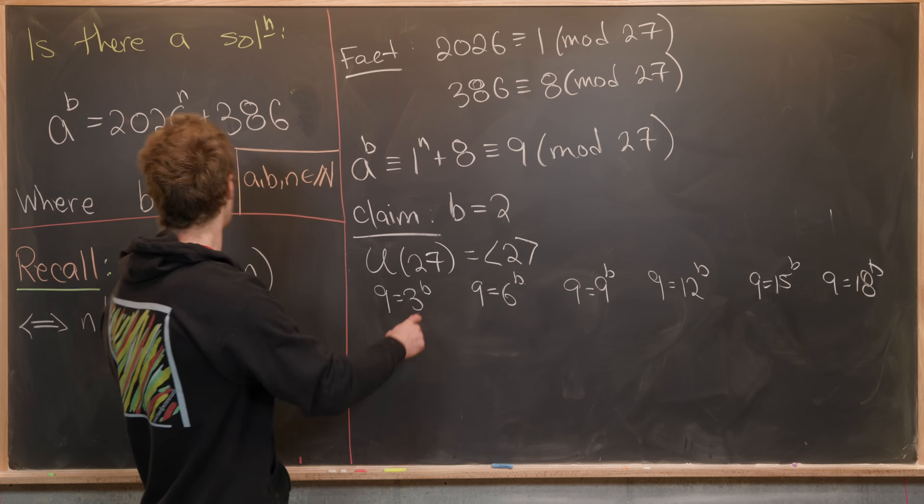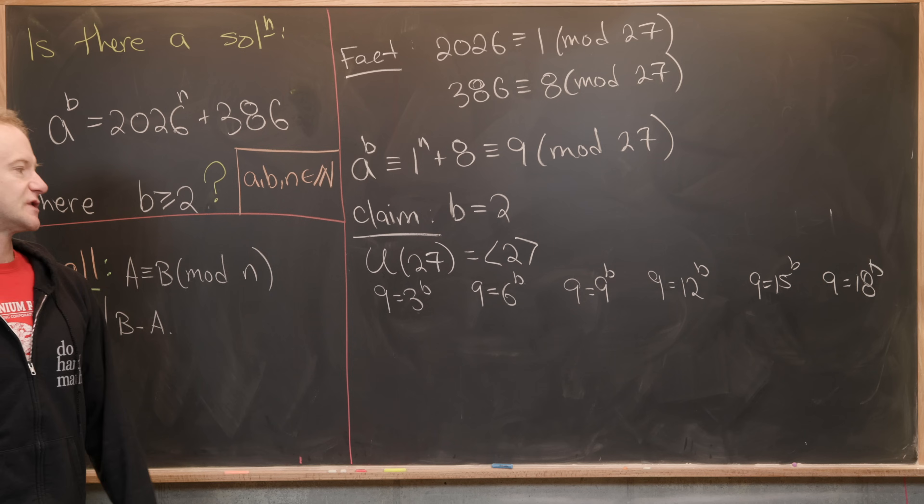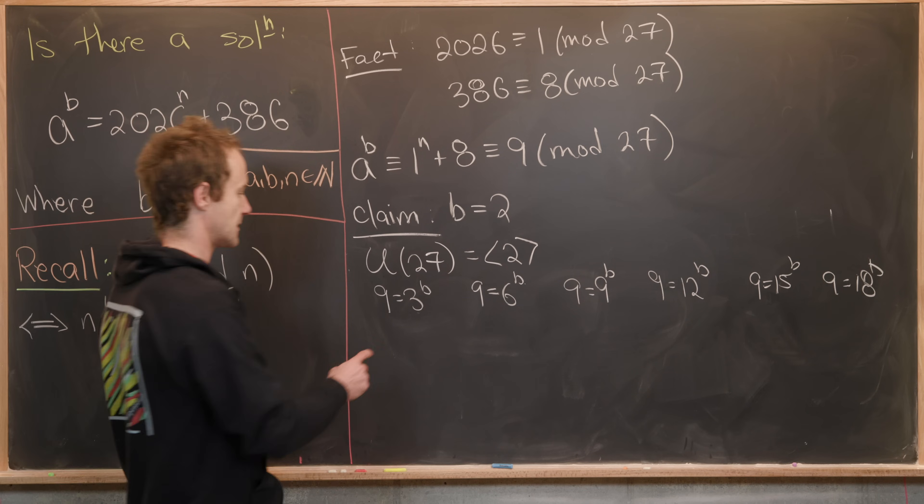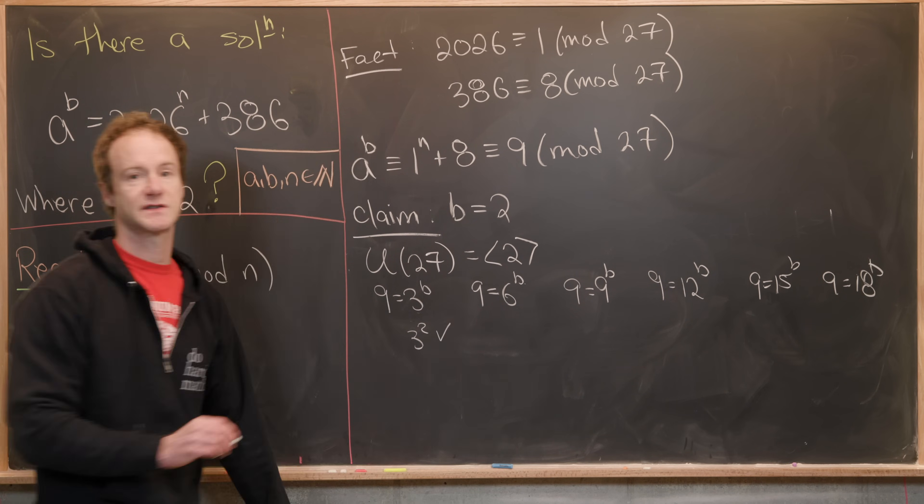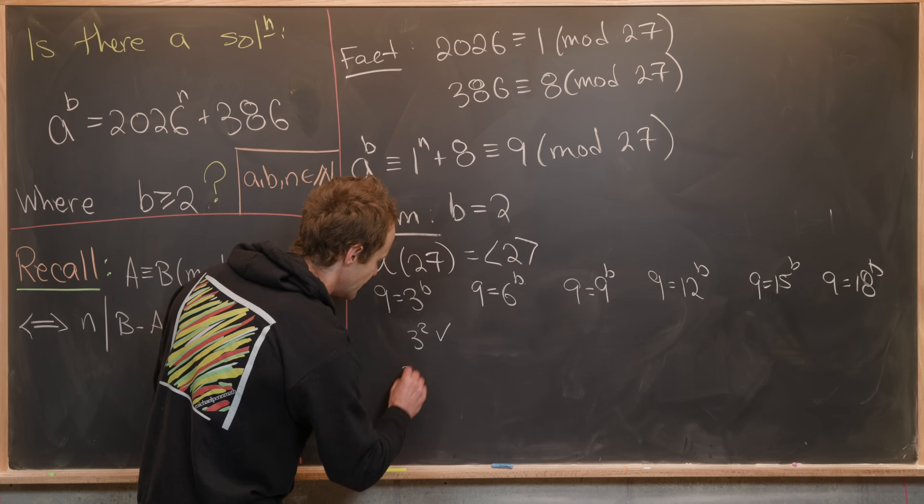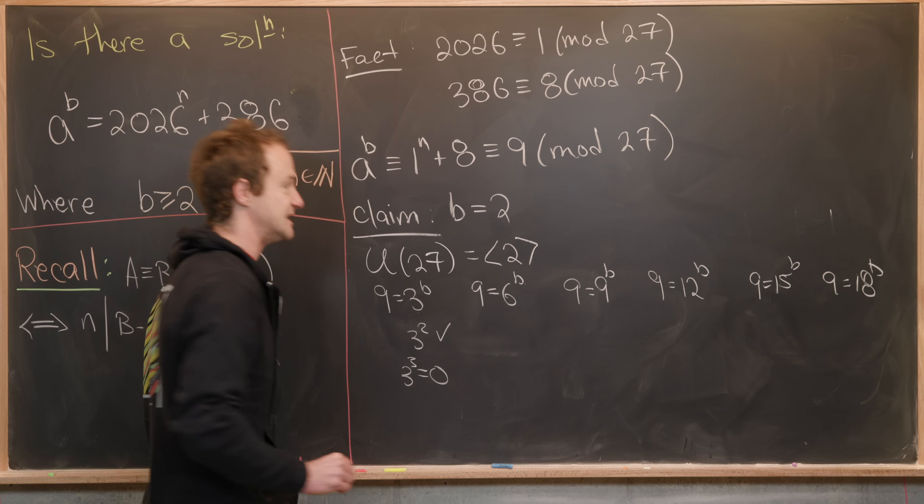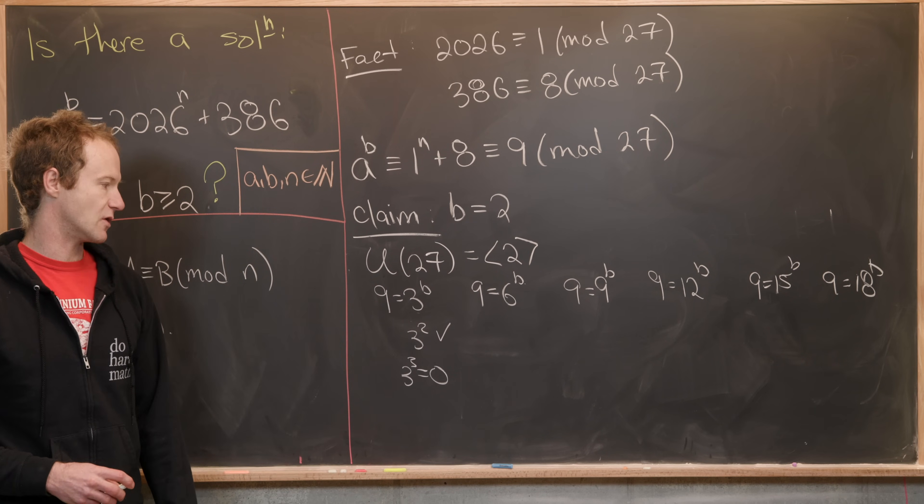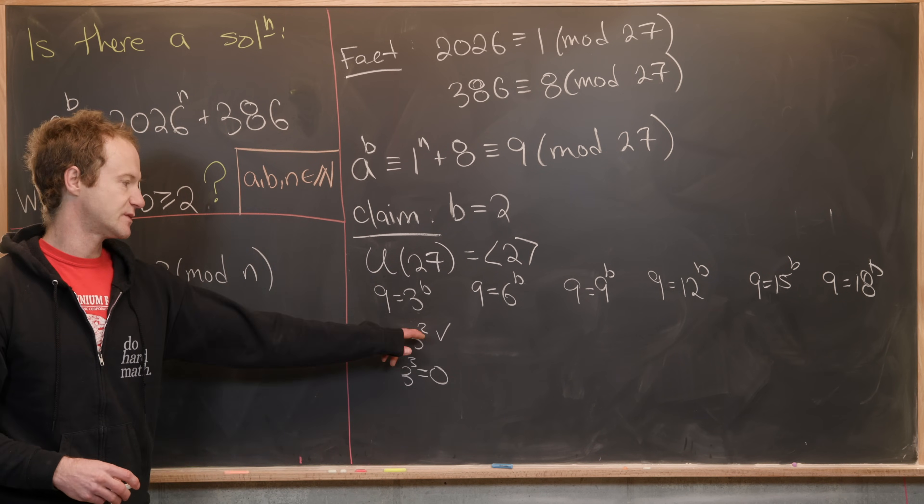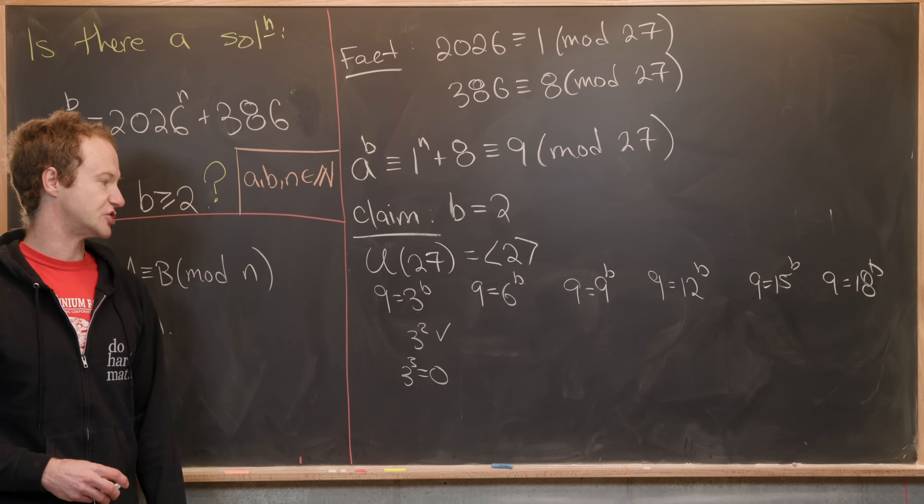We'll notice b has to be bigger than or equal to 2 so we actually don't have to go too far. So 3^2 is obviously equal to 9. That works. But 3^3 is equal to 0. Well that's because it's 27. And 27 ≡ 0 (mod 27). So this would tell us that b has to be equal to 2.